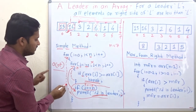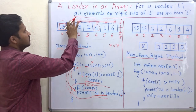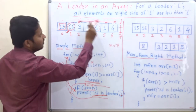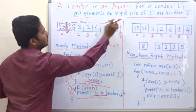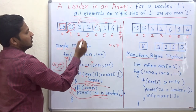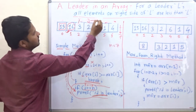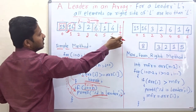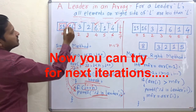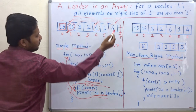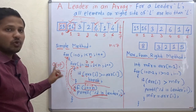After completing this for loop, we go to the next iteration. Continuing the scan for remaining elements, we found 3 leaders in this array: 16, 6, and 4. This is how the code works, and the time complexity is O(n²).